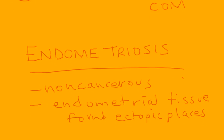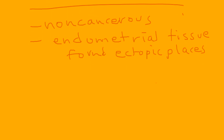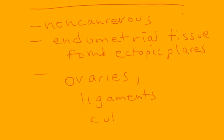When this endometrial tissue is found in ectopic places, it can be found in the ovaries, in the ligaments of the pelvic area, in the posterior cul-de-sac — there's a long list of places. It's good to get a visual picture of what exactly is happening before we get into this discussion.